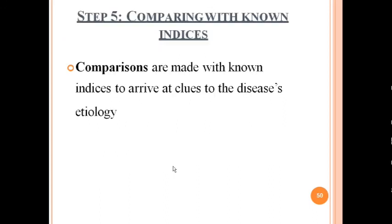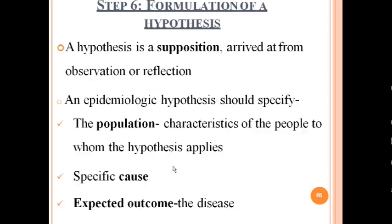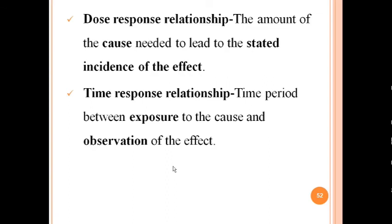Comparing with known indices is the essence of epidemiology — comparisons are made with known indices to arrive at clues to disease etiology. After comparing with known indices, a hypothesis is formulated. A hypothesis is a supposition arrived from observation. An epidemiological hypothesis should specify the population, characteristics of the people to whom it applies, specific cause, expected outcome, dose-response relationship, the amount of cause needed to produce the effect, and the time-response relationship between exposure and observation of the effect.